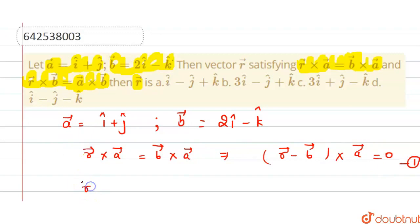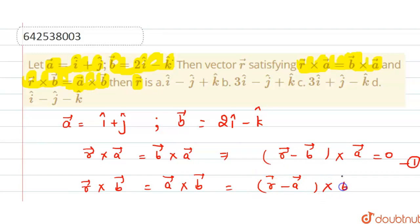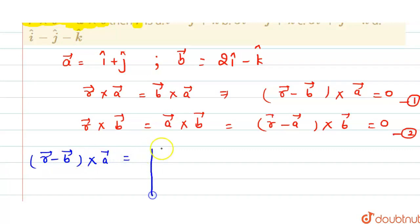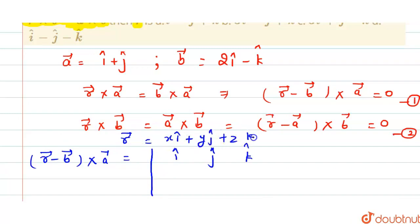And the other condition is r vector cross b vector equals a vector cross b vector. So this will be r vector minus a vector, cross b vector, equals 0. This is equation 2. Now let us solve these equations. Let my r vector be x i cap plus y j cap plus z k cap.